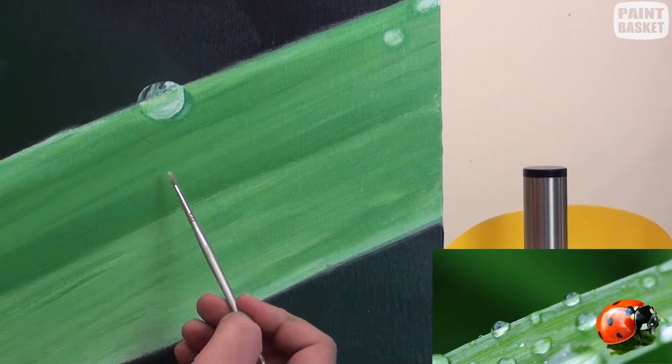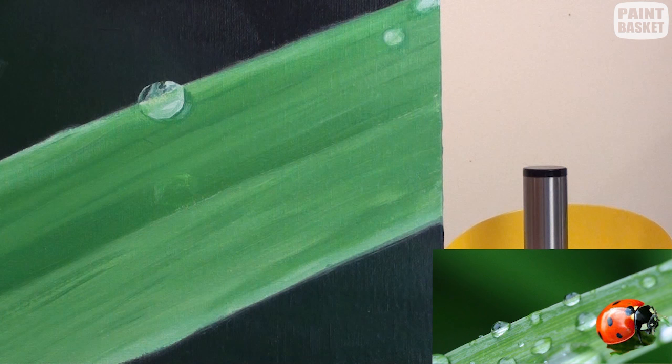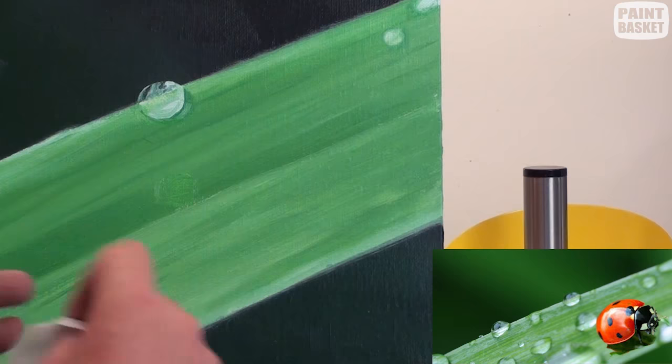So that process works like this. Pick up a little bit of turpentine on your brush and just lift out that rounded shape where you want the water drop to be. Then take a piece of paper towel and just soak up that turpentine. We're trying to create a lighter area underneath the water drop.